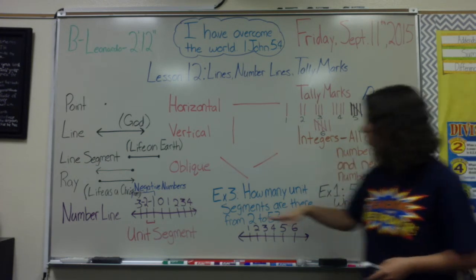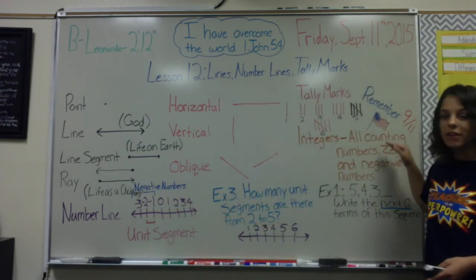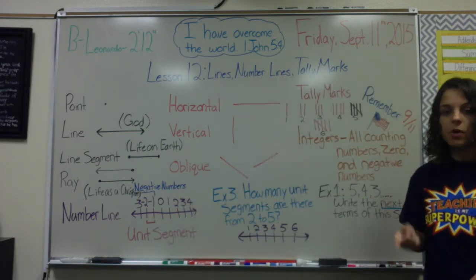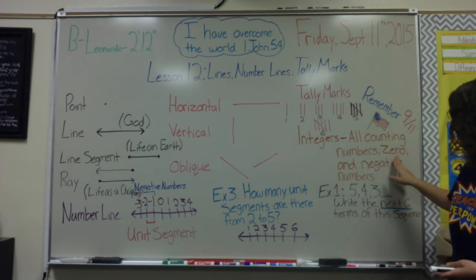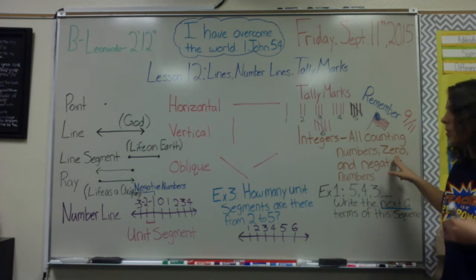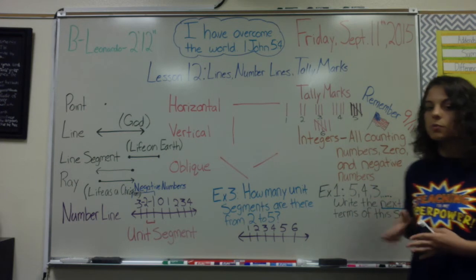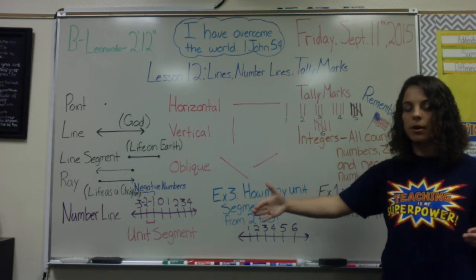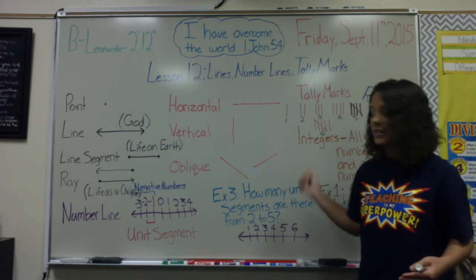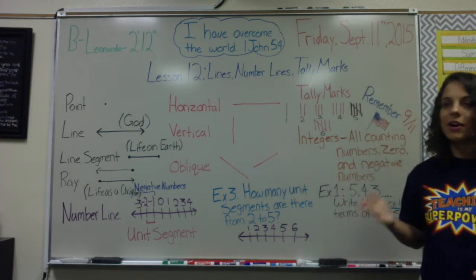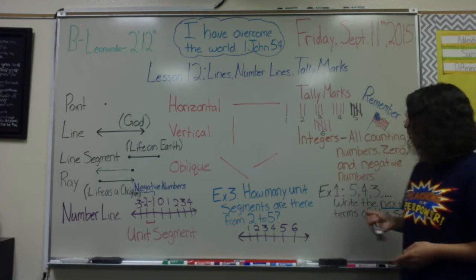Another vocabulary term is integers. This number line includes all integers. Integers are all counting numbers — one, two, three, four, five, six, and so forth — plus zero, since zero is not a counting number. So integers include all counting numbers, zero, and negative numbers — basically every whole number. Integers do not include decimals and fractions.